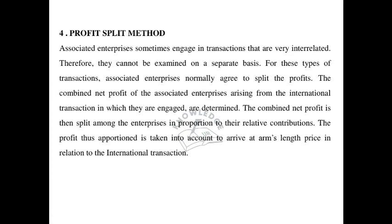The Transactional Price Method is divided into two: the Profit Split method and the Transactional Net Margin method. Associated enterprises sometimes engage in transactions that are very interrelated and therefore cannot be examined on a separate basis. For these types of transactions, associated enterprises normally agree to split the profits. The combined net profit of the associated enterprises arising from the international transactions is determined and then split among the enterprises in proportion to their relative contributions, to arrive at the arm length price.